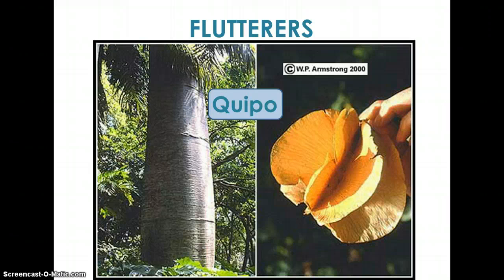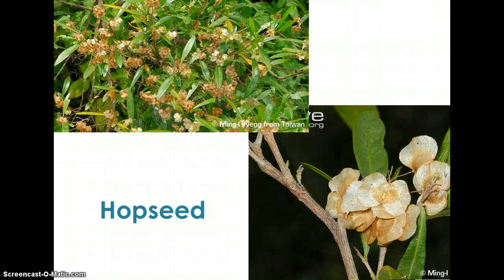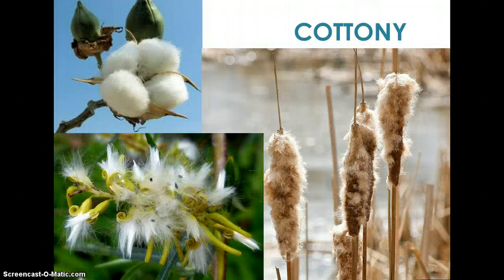There are also some flutterers. Flutterers have a slightly different shape and allow seeds to travel longer distances on the wind. Here we have the quipo tray — you can see the seed shape on the right, which is a flutterer. Another flutterer is the hop seed; you can see the plant and a close-up of its seeds. Flutterers travel longer distances. Lastly, we have the cottony ones — they don't take on a parachute shape but are simply fluffy, and use that fluffiness to be carried by the wind.